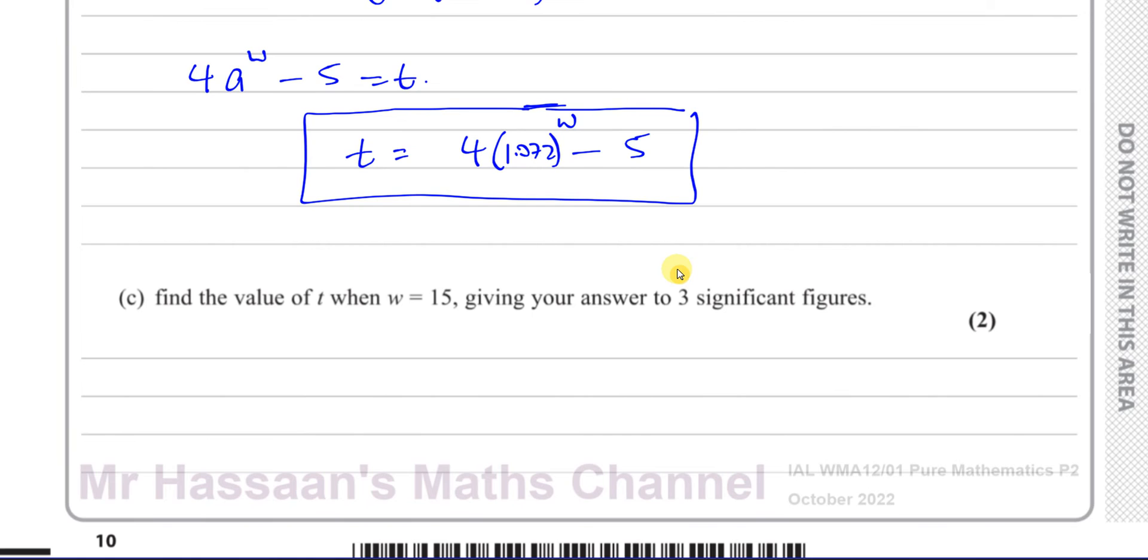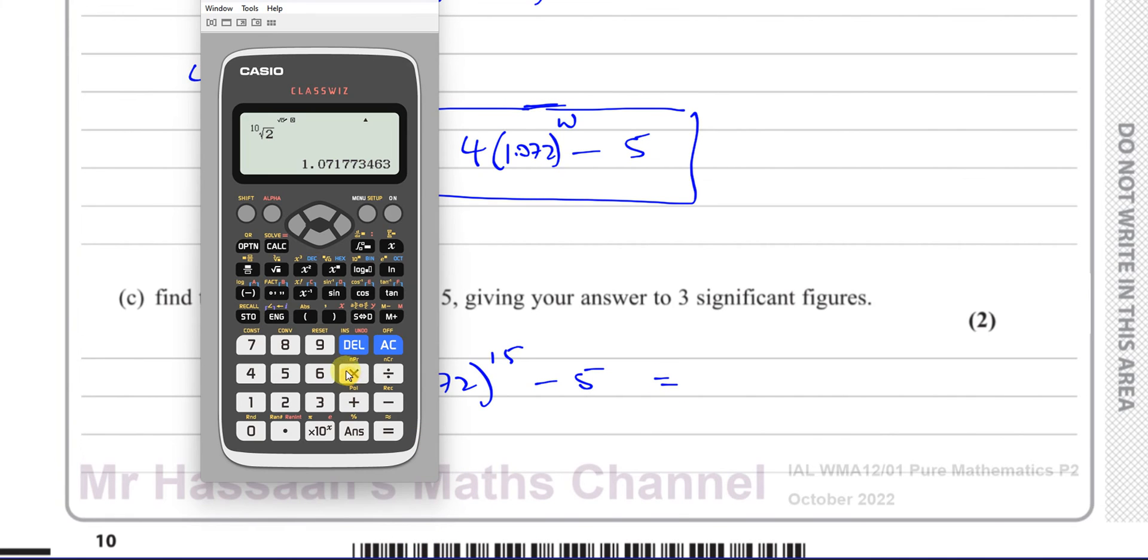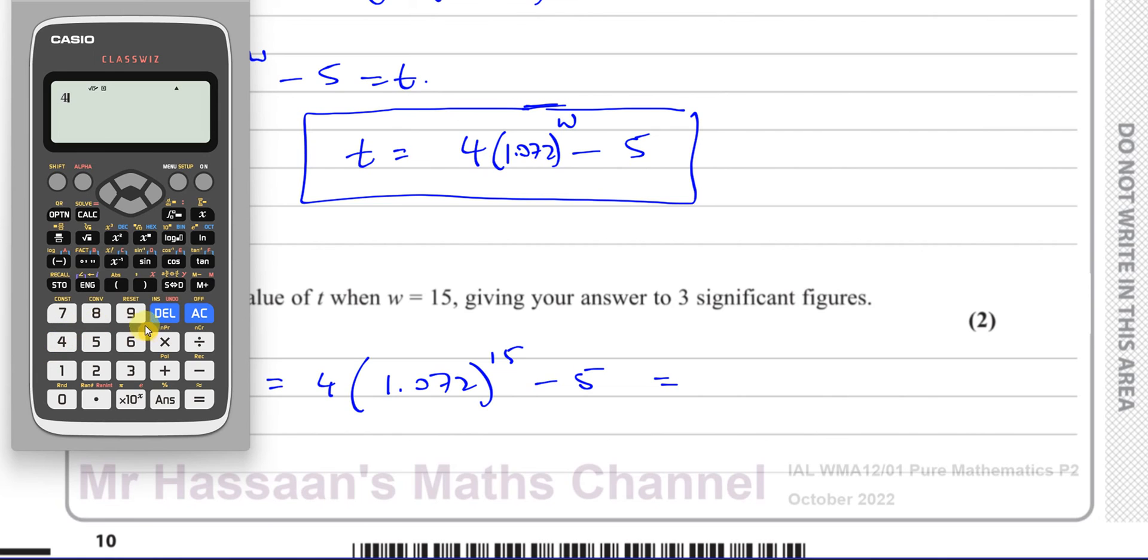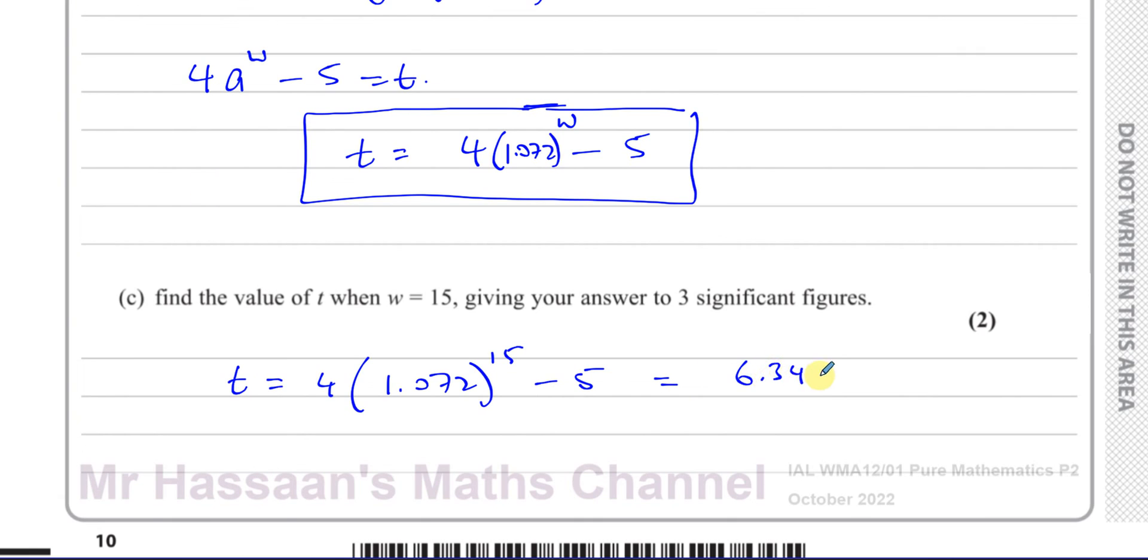Then part c. Pretty simple. Find the value of t when w equals 15. You simply have to replace the w with 15. So again, using the same equation that we have formed. So 4 times 1.072 to the power of 15, and then minus 5. Make sure that's correct. And that gives us 6.3496.